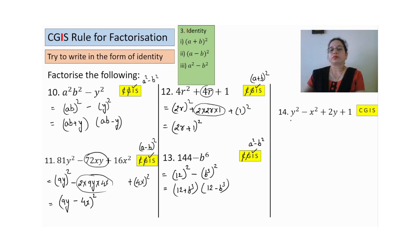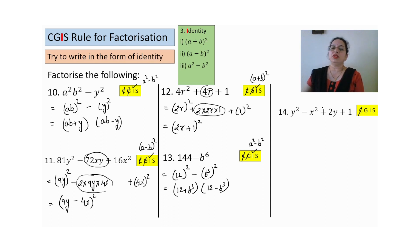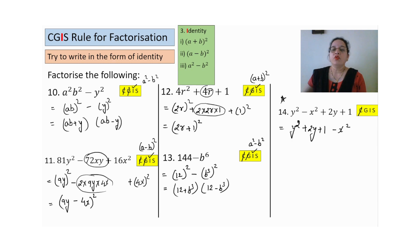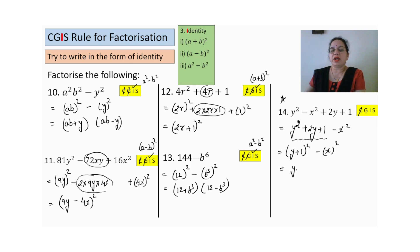Fourteenth sum — common not possible. Four terms, so grouping. Two-two grouping doesn't work easily, so try three terms together and one separate. Group all y² terms: y²+2y+1 and minus x². Now y²+2y+1 is (y+1)² by identity, and x² is (x)². So we have (y+1)²-x², which is again a²-b² identity. Once we add and subtract: (y+1+x)(y+1-x). These are the two factors — this question is very important and something different.